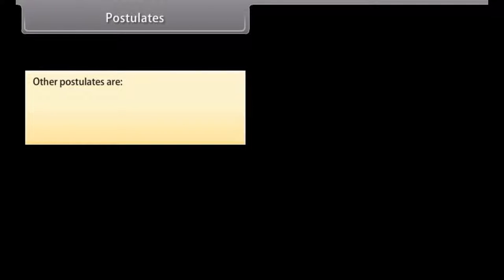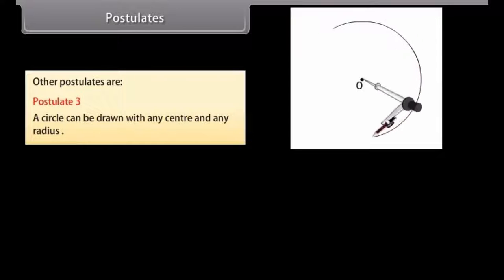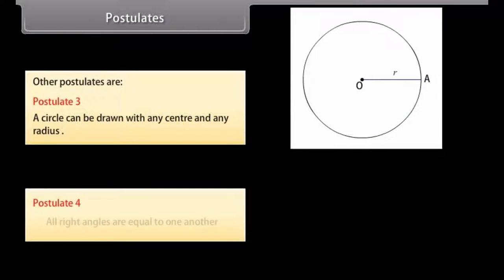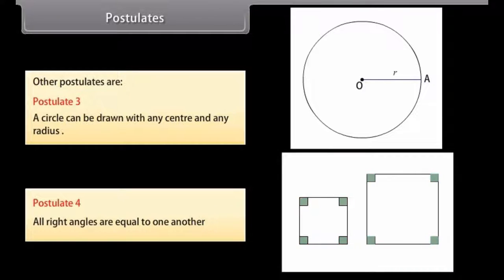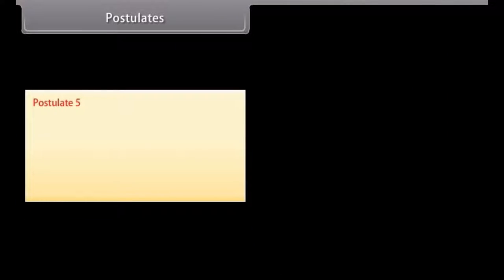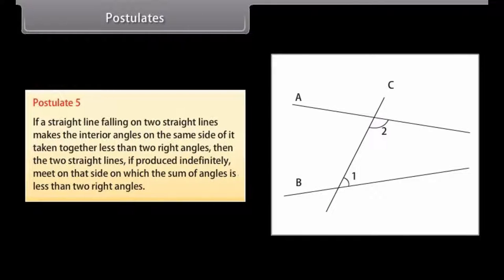Other postulates are: Postulate 3: A circle can be drawn with any center and any radius. Postulate 4: All right angles are equal to one another. And postulate 5 is: If a straight line falling on two straight lines makes the interior angles on the same side of it taken together less than two right angles, then the two straight lines, if produced indefinitely, meet on that side on which the sum of angles is less than two right angles.